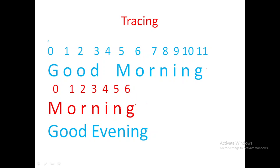Starting pattern matching from the first character: match the first character of the main string with the first character of the pattern string. 'G' and 'M' - are they the same? They are not same. When they are not same, copy 'G' from the main string to the resultant string. Whenever a mismatch happens, copy the character from the main string and only increment the corresponding index of the main string. The pattern's index remains at zero because a mismatch occurred.